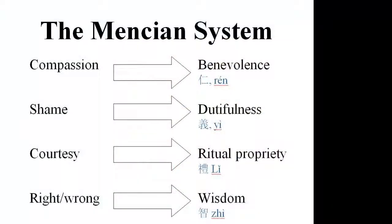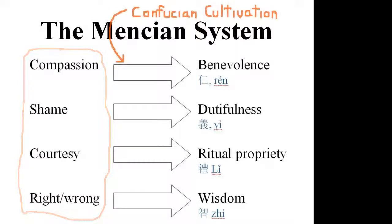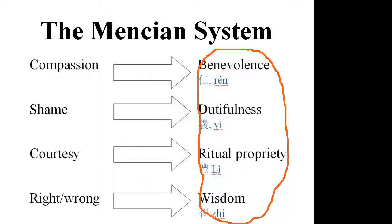In fact, all of the theories we are going to be looking at can be represented by a diagram like this one. On the left, you've got a set of basic innate capacities — in this case, Mencius has four. Across the top, we have a process of developing those capacities; in this case, Mencius talks about the practice of Confucian cultivation. And then on the right, we've got what the culture would recognize as regular ethics — in this case, the four Confucian virtues.